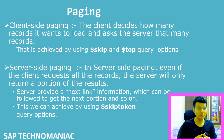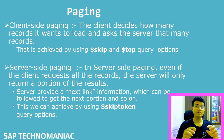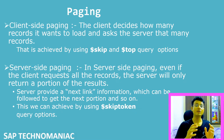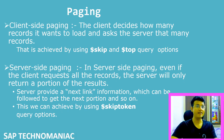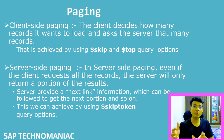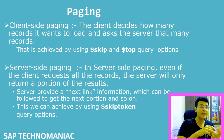In server-side paging, it's the reverse — the backend developer decides how much data to send to the front end. Regardless of the front end asking for all data, the server sends only 10 or 20 records at a time. Along with those records, the server sends additional information so the front end can request the next batch.